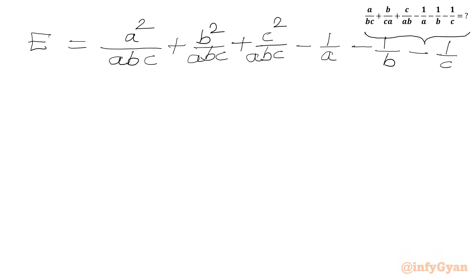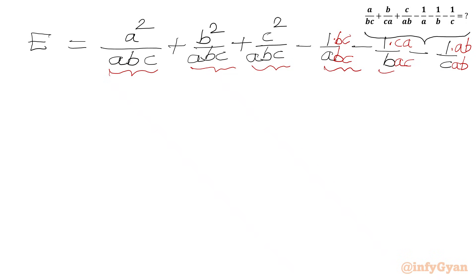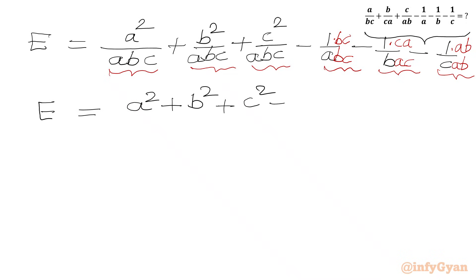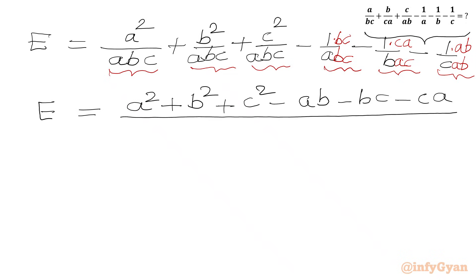We have denominators abc, a, b, and c. To get a common denominator of abc, we multiply 1/a by bc, 1/b by ca, and 1/c by ab in both numerator and denominator. Now the denominator is the same: abc. So we can write E equal to (a² plus b² plus c² minus bc minus ca minus ab) over abc.